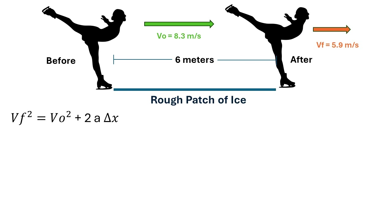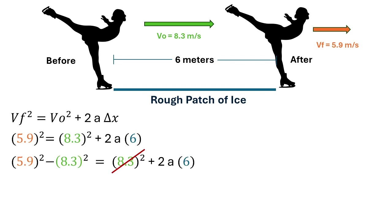In this situation, what we want to know is the acceleration that the skater had to change her velocity from 8.3 meters per second to the right to 5.9 meters per second to the right. We are going to use kinematic equations. From kinematic equations, velocity final squared equals velocity initial squared plus 2 times the acceleration times delta x — that's the width of the rough patch. The final velocity is 5.9 meters per second, the initial velocity is 8.3, and delta x is 6 meters.